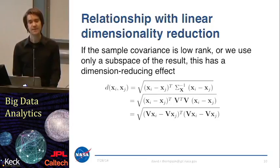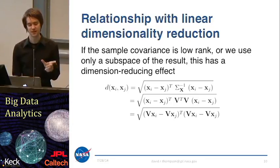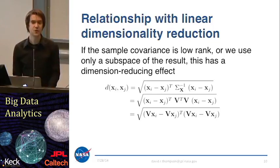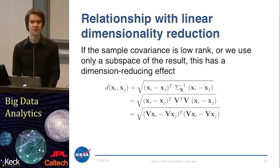The relationship with linear dimensionality reduction is important here. If this linear pre-transformation represents a subspace of the data — that is, the covariance matrix isn't full rank or V has fewer columns than the full space of the data — then this actually equates to a dimensionality reduction. In that case, it's akin to PCA or some of the other methods we've shown previously, the only difference being that the dimensionality reduction is taking the class structure into account and trying to separate the different classes from each other.